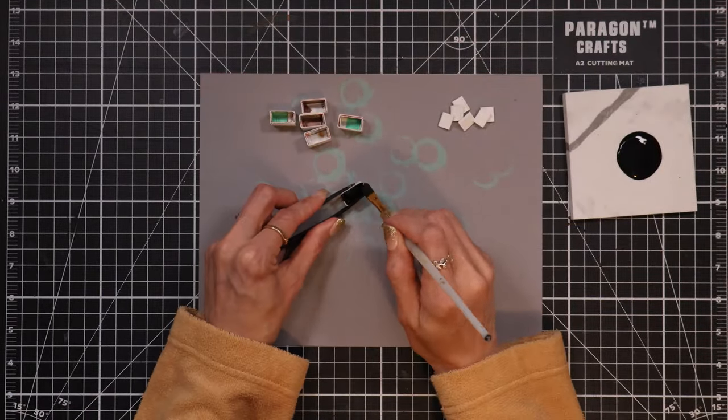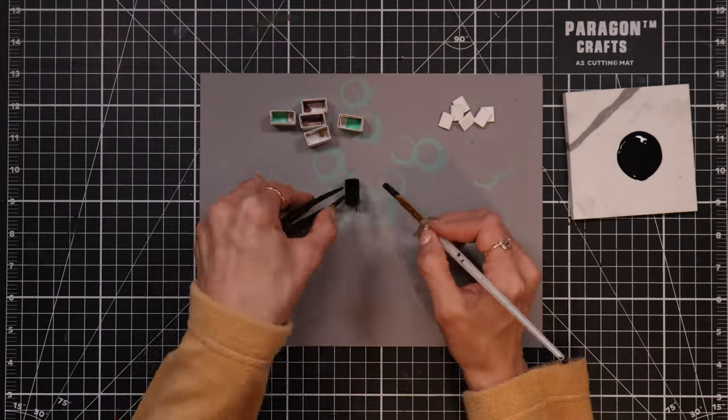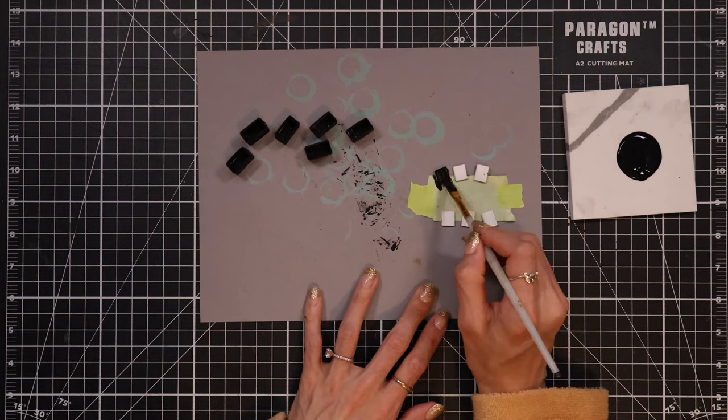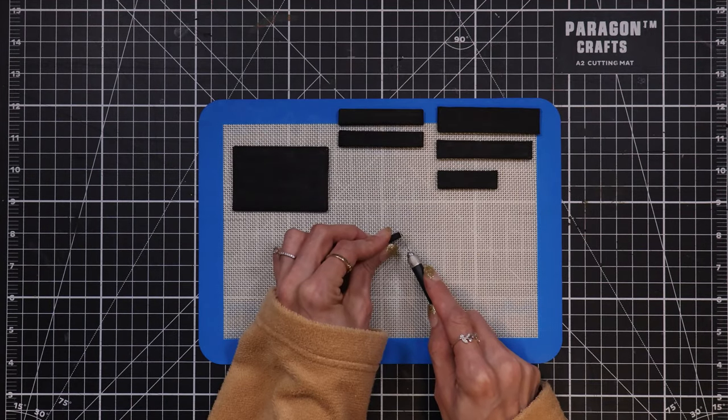To make the tiny little dividers easier to paint, I adhere them to some painter's tape. My favorite is frog tape, but really any type of low tack tape would work, or even a post-it note. While those dry, I move on to the frame.